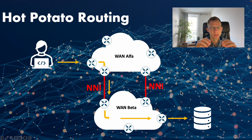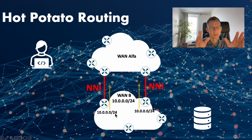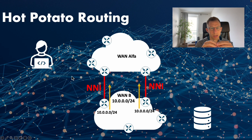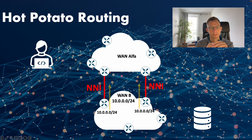We can achieve hot potato routing by advertising all the subnets from WAN Beta across all NNIs to WAN Alpha without any routing adjustment. This should then steer traffic in WAN Alpha always to the closest NNI towards WAN Beta.